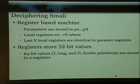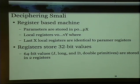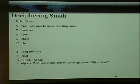It's a register-based machine. Parameters passed into a function are stored in registers at P0 through however many parameters are passed in. So if you have two parameters, you're going to have P0 and P1. Local registers are used for everything else during the function — basically storage. The last number of parameter registers are also mirrored in the local registers, so V8 will also equal P3. Also, values are 32-bit; long and double primitives are stored across two registers. Here are some of the primitives you'll see: void type, boolean type, and so forth — this is how it reads in the human-readable bytecode.